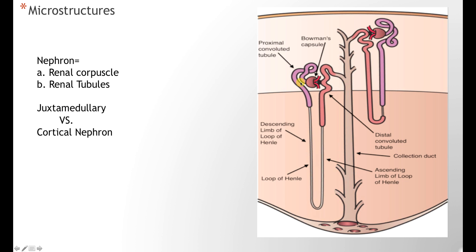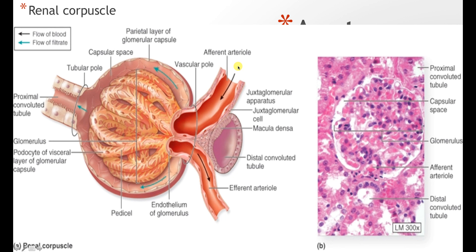The microstructures of the kidney are straightforward. A nephron consists of two structures: a renal corpuscle and a tubular structure. There are two types of nephron — one close to the medulla, called the juxtamedullary nephron, and one higher up in the cortex, called the cortical nephron. The renal corpuscle is where the blood gets filtered in the glomerular capillaries and exits into the proximal convoluted tubules.